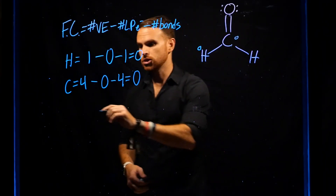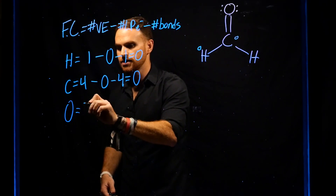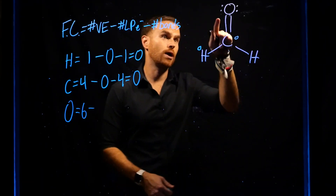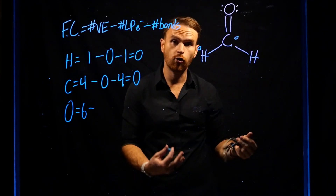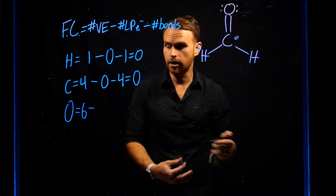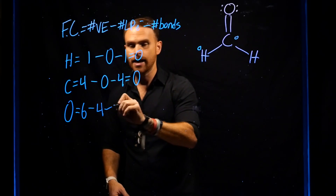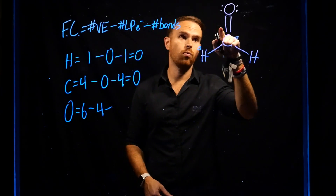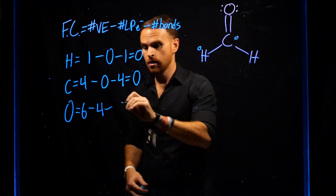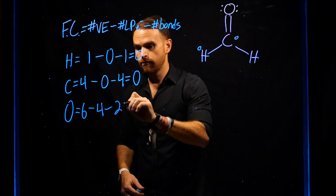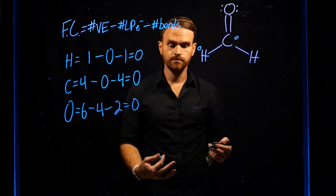Oxygen has six valence electrons. It is surrounded by two plus two, which is four lone pair electrons, and it is surrounded by one, two bonds. Therefore, oxygen is also zero.